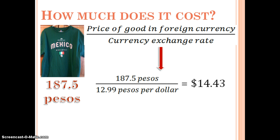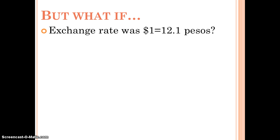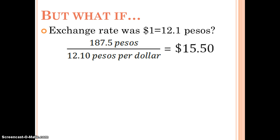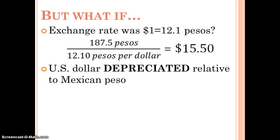Now suppose the exchange rate changes from 12.99 pesos per dollar to 12.1 pesos per dollar. That same shirt, still priced at 187.5 pesos, now costs $15.50 in American dollars. This tells us the American dollar has depreciated relative to the Mexican peso — one American dollar can buy fewer pesos than before. Put another way, the Mexican shirt whose peso price hasn't changed now costs more American dollars to purchase, so the dollar's purchasing power has declined.